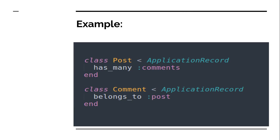That's all about has_many association briefly. In the next lecture, we will look at the belongs_to model, which is required along with has_many to form a one-to-many relationship between two active record models. We will also implement a one-to-many relationship between a Student and a Blog model. Thanks for watching — take care and stay safe.